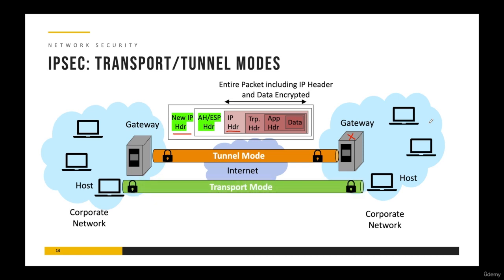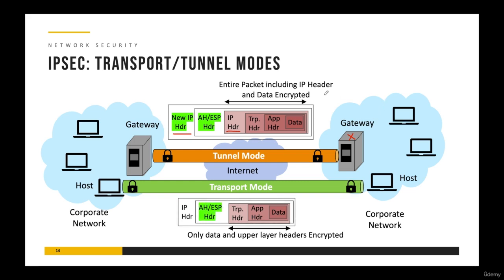In transport mode, we have host-to-host or app-to-app communication and encrypt only the data and upper layer headers — the actual IP header remains open and unencrypted, enabling easy routing on the internet. The tradeoff is that in tunnel mode, since the IP header is also encrypted, no one eavesdropping can determine the actual destination — they only see the gateway IP address. In transport mode, the actual destination IP address is visible, so traffic patterns can be inferred. Generally speaking, both modes are very secure and have their own specific use cases.